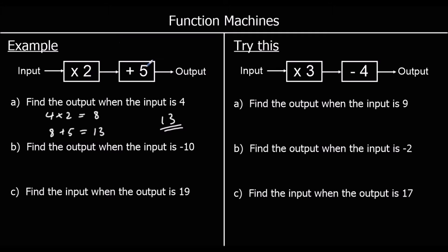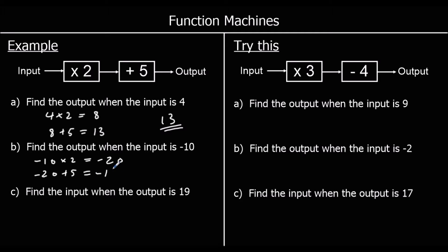4 times 2 and then plus 5 gives us 13. Part B: find the output when the input is negative 10. So we're putting negative 10 in. Negative 10 times 2 is negative 20. And then negative 20 plus 5 is negative 15. So the output is negative 15.